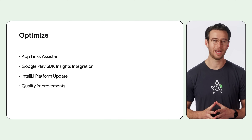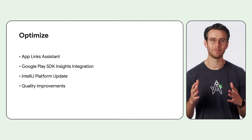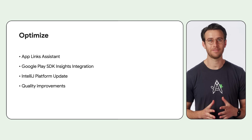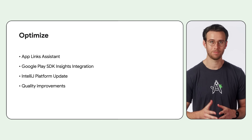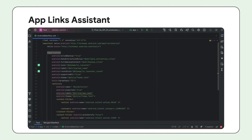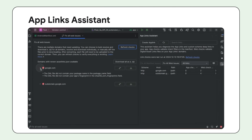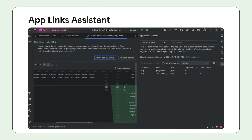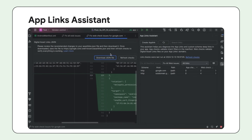Debugging is essential, but optimization is what truly unlocks your app's full potential. Let's dive into the final set of features designed to help you deliver truly exceptional user experiences. App Links Assistant simplifies the process of implementing App Links by serving JSON syntax that resolves broken deep links for your app. You can review the JSON file and then upload it to your website.